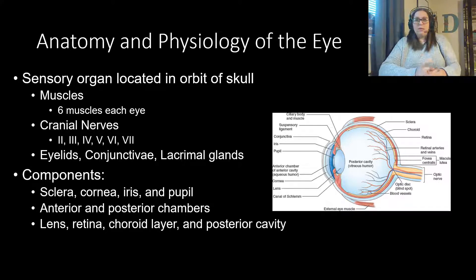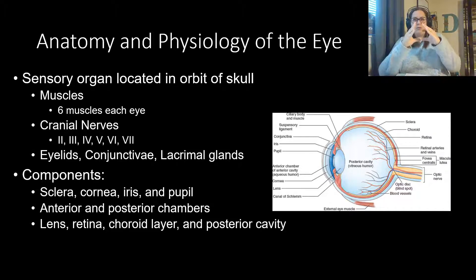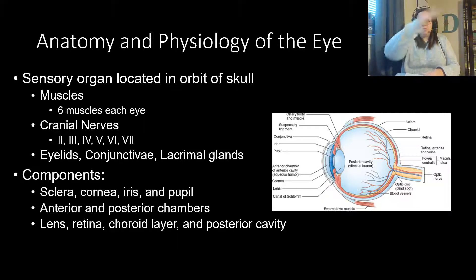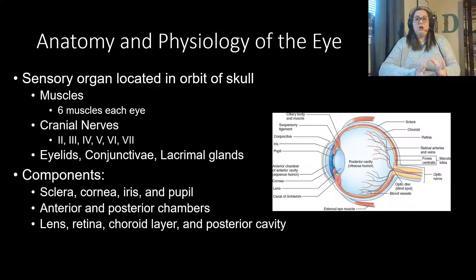The lens helps you accommodate and focus on objects by changing shape — compressing or relaxing. Inside the scleral layer is the choroid, the middle layer with dark pigment that absorbs light so it doesn't bounce around. The retina is the part actually used for seeing, containing sensory nerves called rods and cones, which collect visual information and send signals to the optic nerve.